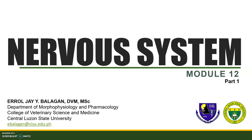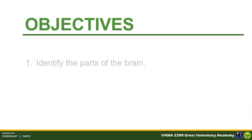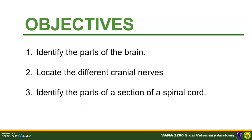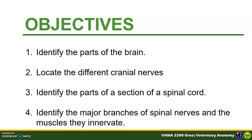At the end of this module, you should be able to identify the parts of the brain, locate the different cranial nerves, identify the parts of a section of a spinal cord, and identify the major branches of the spinal nerves and the muscles they innervate.